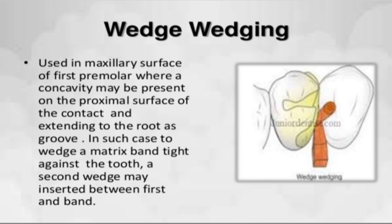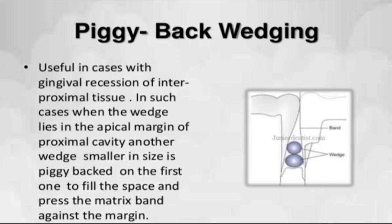In piggyback wedging, a second wedge is inserted between the first wedge and the band. Two wedges are used — one large and one small. This is useful in cases of gingival recession of interproximal tissue. Two wedges are placed one after another — one small and one large — to fill the wide space and place the matrix band against the margin.